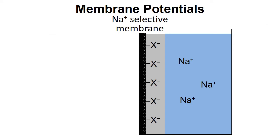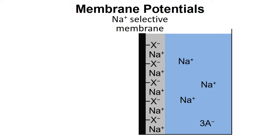To start with we're just going to consider half of this set up — just one side of the membrane and one solution. Initially this side of the membrane is electroneutral because there are sufficient sodium ions to balance out the charges of the fixed anion positions. The solution is also initially electroneutral because there are sufficient anions to balance out the charges of the sodium ions. There is a reversible electrochemical reaction whereby sodium ions from the membrane can diffuse into the solution and sodium ions in the solution can diffuse into the membrane.